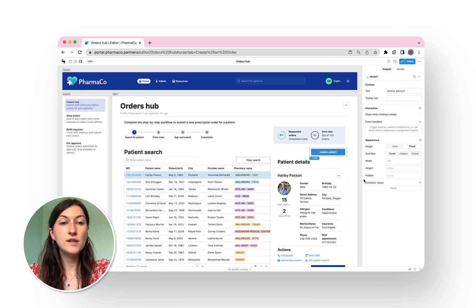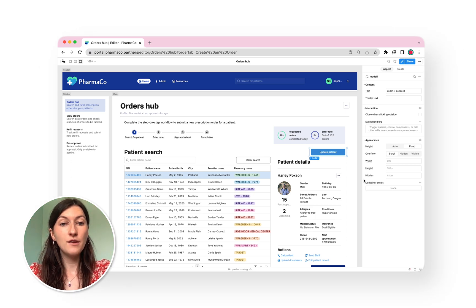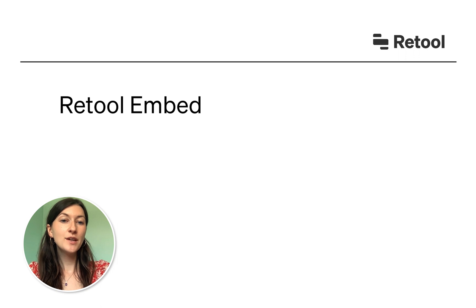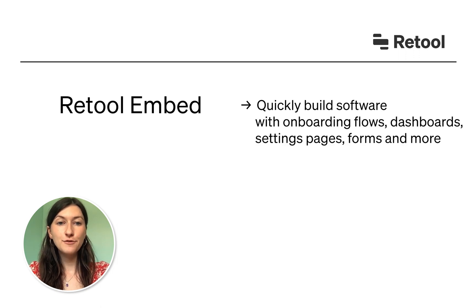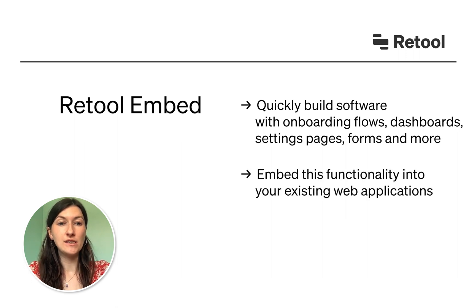But let's say you already have an existing product or portal and want to add apps or features to it quickly. We also have a product called Retool Embed that can help. Using Retool, you can build out functionality like onboarding flows, dashboards, settings pages, forms and more within hours, and embed those pages into your pre-existing web apps.